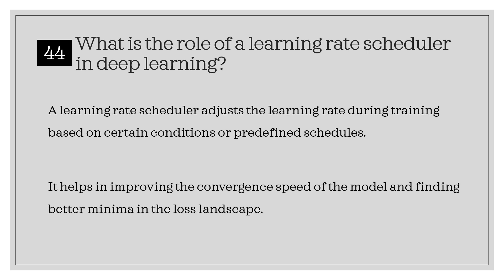What is the role of a learning rate scheduler in deep learning? A learning rate scheduler adjusts the learning rate during training based on certain conditions or predefined schedules. It helps in improving the convergence speed of the model and finding better minima in the loss landscape.